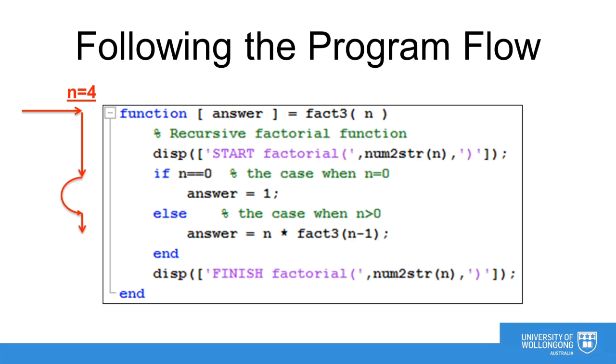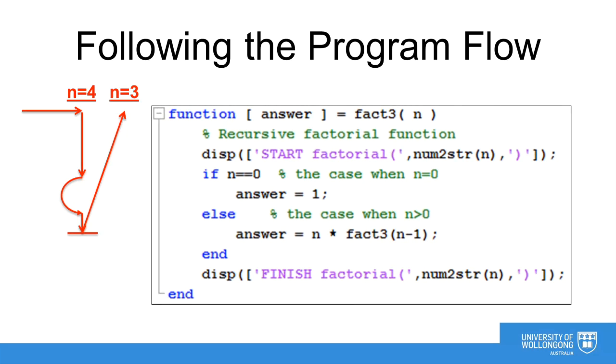However, because we do not know the value of factorial of n-1, the program cannot continue with this call. It must suspend the call of the function for now whilst calling the n equals 3. When this happens all data relating to the n equals 4 call is stored on the stack for later use.